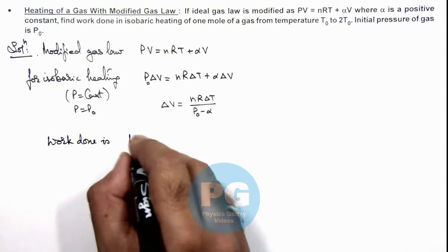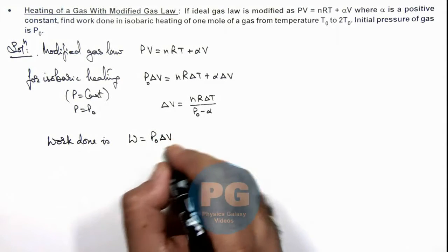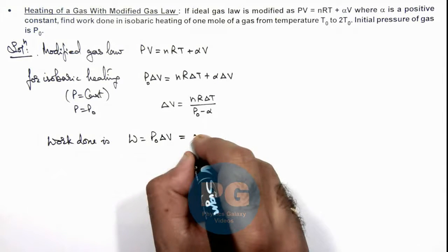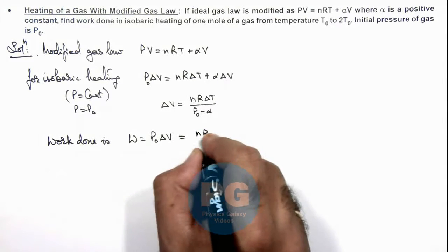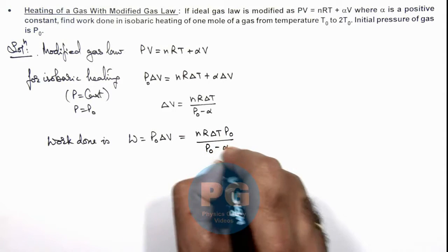Work done W can be written as P₀∆V, as pressure is constant. So on substituting the value of ∆V this is nR∆T·P₀ divided by (P₀ - α).